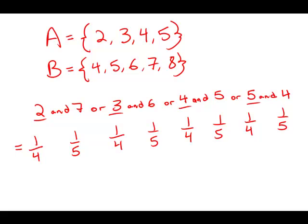The word 'and' gets changed into multiplication. The word 'or' gets changed into addition. These are the fundamental rules for probability.